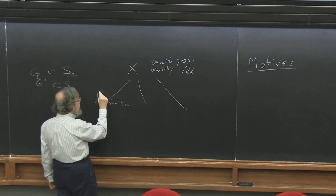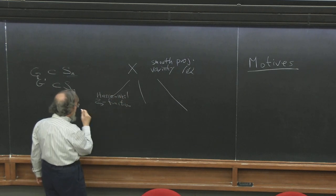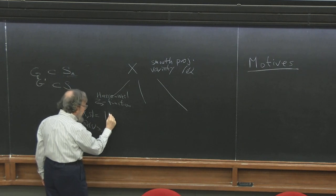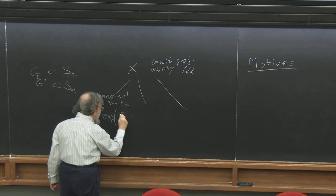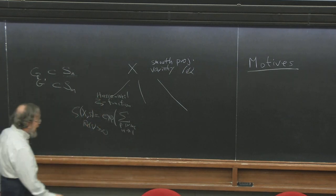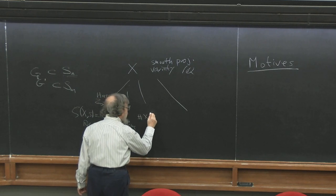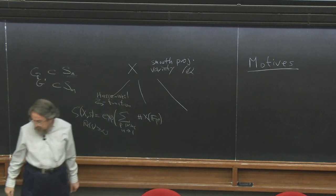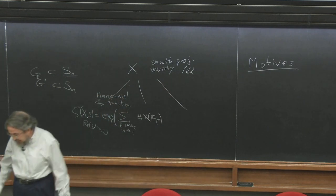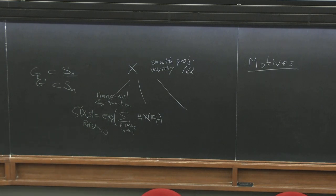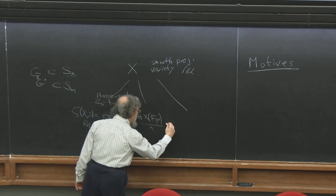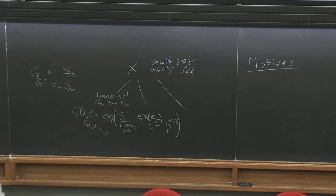The Hasse-Weil zeta function ζ_X(s) is defined, for Re(s) large, as the exponential of a sum over all primes and all integers n ≥ 1. It's a prime power p^n, and we take the number of solutions of the equation over the finite field of p^n elements. Every finite field has p^n elements for a unique prime p and integer n. You write down your equation and count the number of solutions where all the coordinates are numbers mod p—it's finite because there are only finitely many variables, each ranging over p^n values. You take that, divide by n, multiply by p^{-ns}. This converges for s large, and that's the Hasse-Weil zeta function.